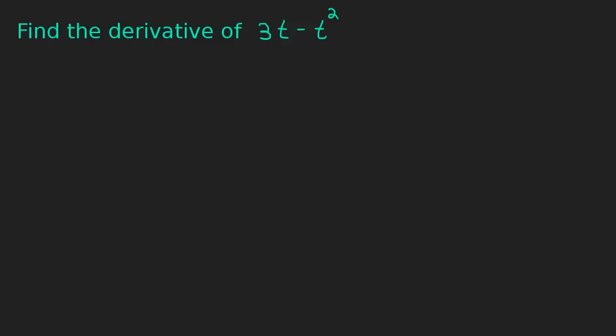Okay, so here we're being asked to find the derivative of 3t minus t squared. So first things first, the fact that this is a t really doesn't change anything at all. It's just instead of calling the variable x, we're now calling it t. So we've literally just changed the letter, but nothing else has changed.